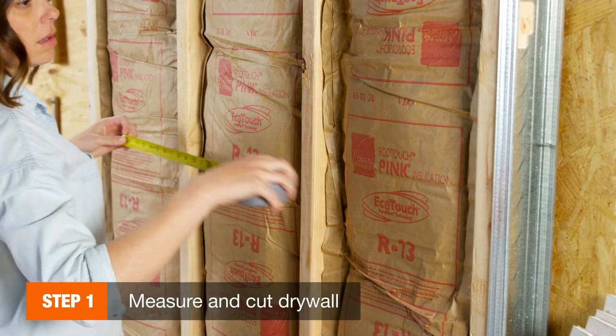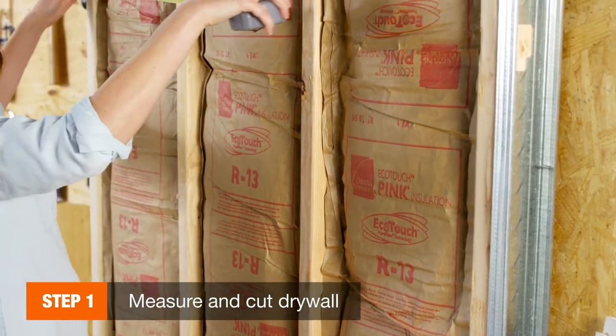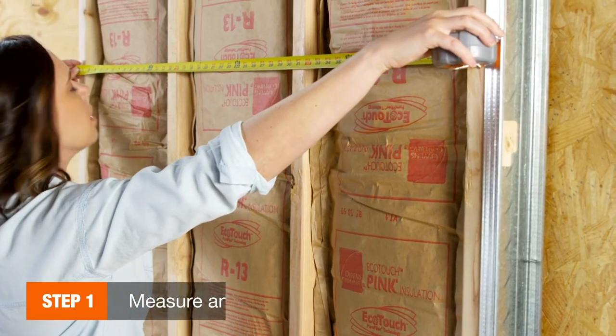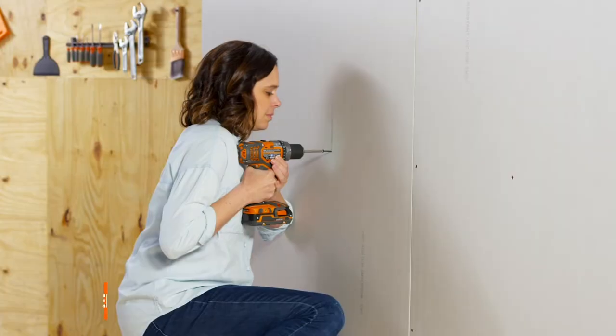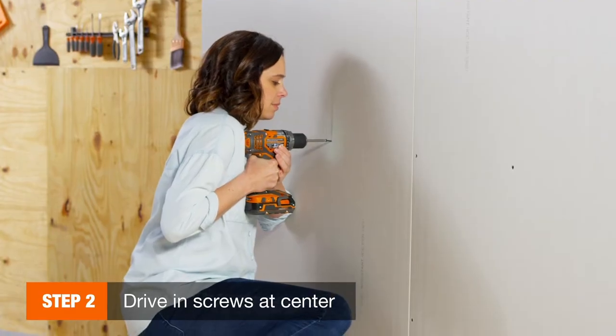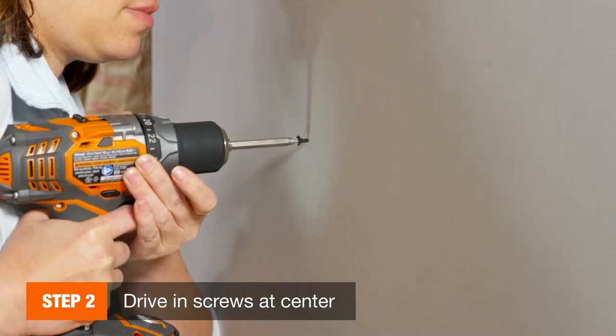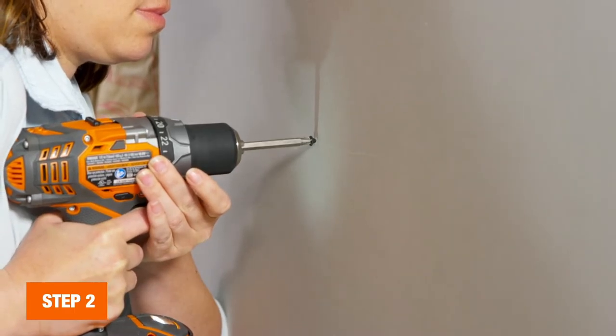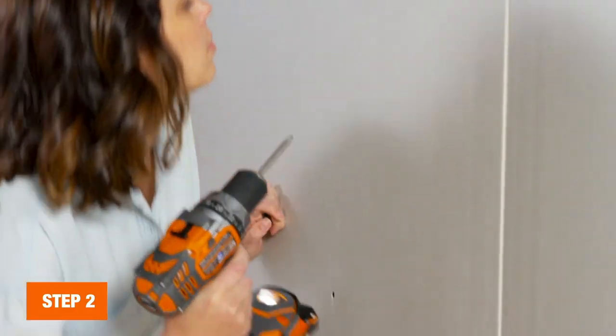Now that you know which drywall screws are right for the job, it's time to learn how to use them to install drywall. After you've measured and cut the drywall sheet, use an electric screwdriver to drive the screws into the panel, starting in the middle at a comfortable height.